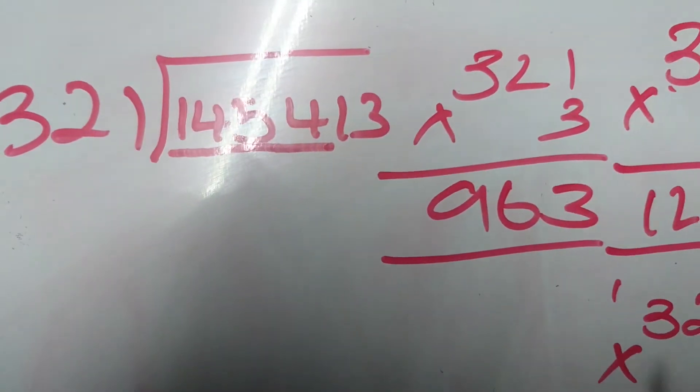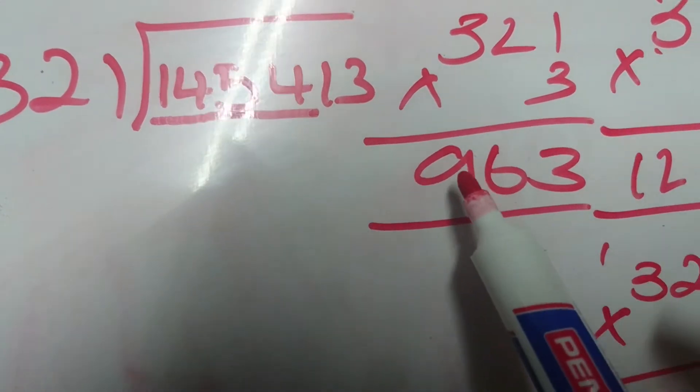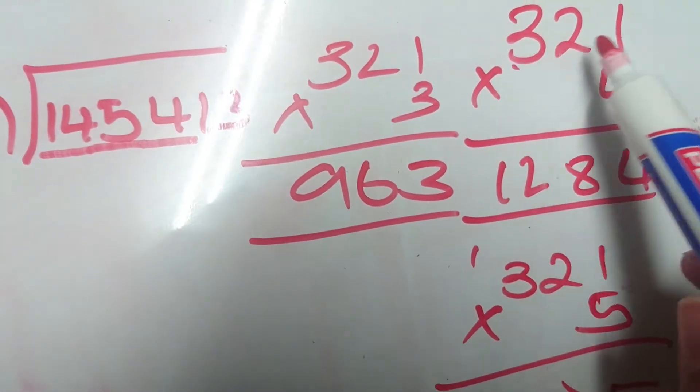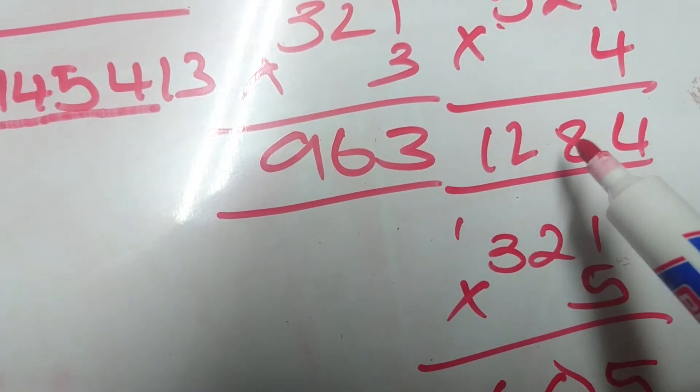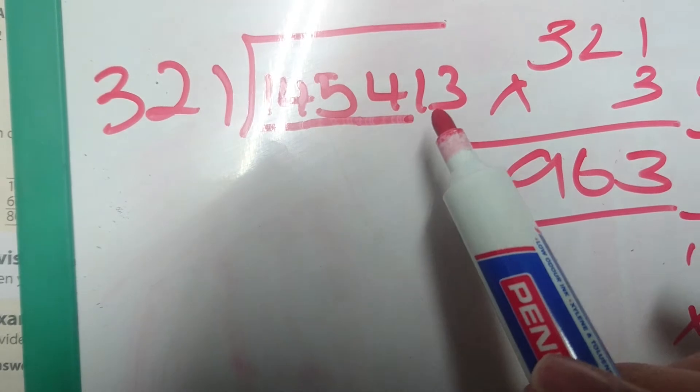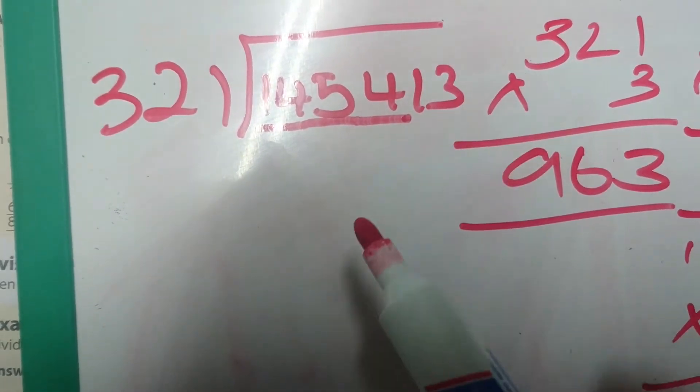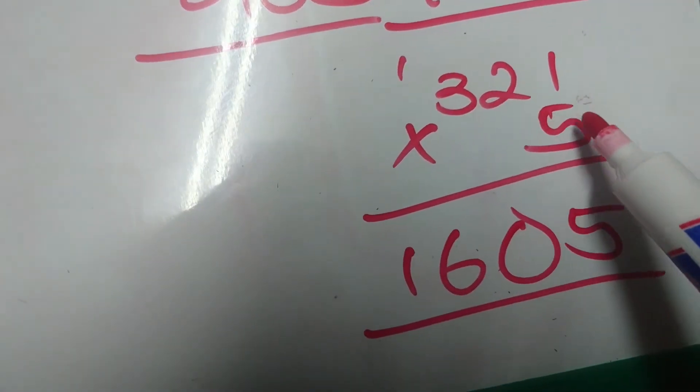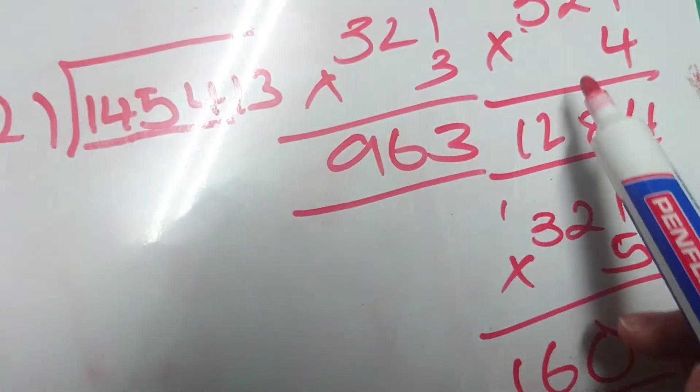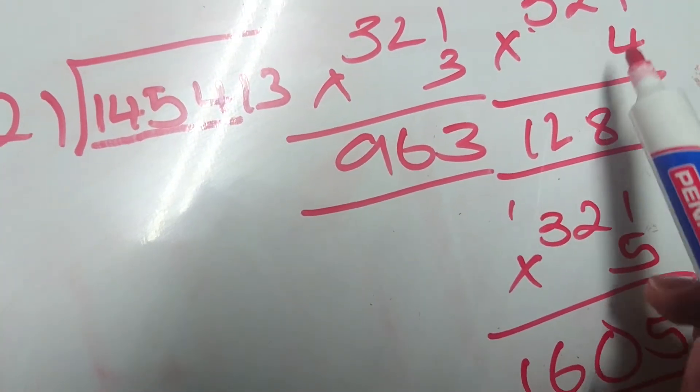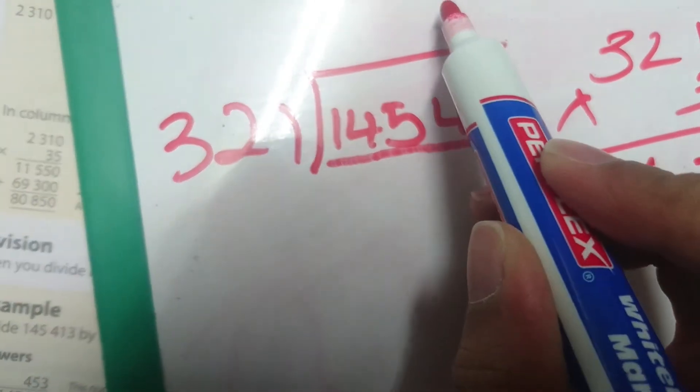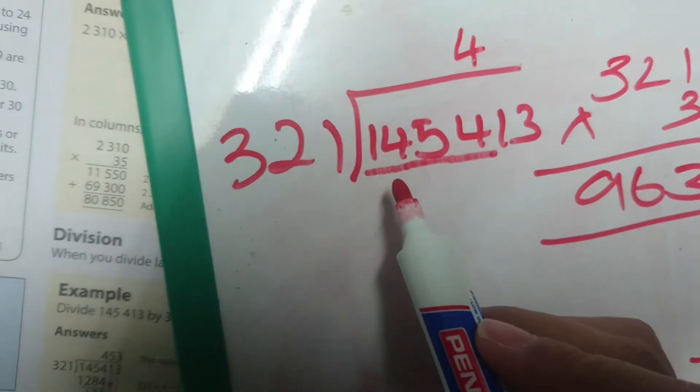You will see that if we times 321 by 3, we get 963, which is too little. So if we say 321 times 4, we get 1,284. Which will fit into there. But let's check if another 321 can fit inside. So let's say 321 times 5: 1,605. We have exceeded this number. Therefore, 321 times 4 is what we are going to use. So it can go into this number 4 times. We put down the 4 and we write the number below.